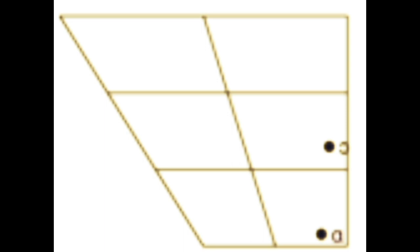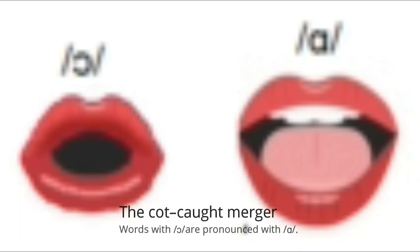The first thing you need to know with these low back vowels is that in standard American English, the O sound does not exist. This phenomenon is called the cot-caught merger. In other words, in standard American English, words that used to be pronounced with O are now pronounced with A.